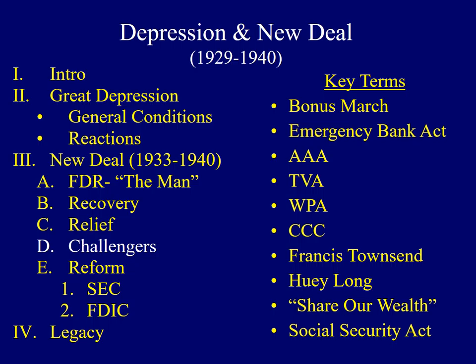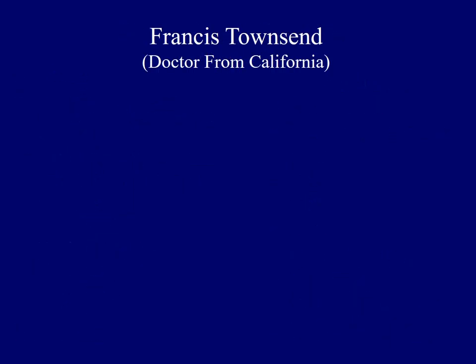Many supported these New Deal programs. However, Roosevelt still faced challengers. Francis Townsend was a doctor from California who had his own plan to end the Great Depression, focused on an old-age pension plan. All retirees over the age of 60 would receive a check from the government of $200 a month, and the money had to be spent within 30 days. He argued this increased spending would stimulate the economy, and if people over 60 retired, it would open up new jobs for younger workers. There was only one catch — it would have bankrupted the nation very quickly.